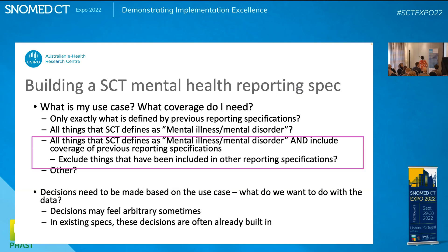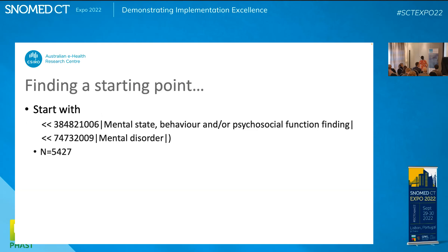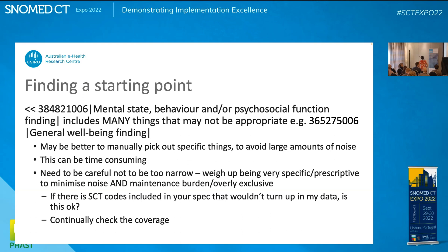I thought I'd lean toward taking advantage of what SNOMED gives us — go as wide as possible in terms of mental illness and mental disorder, while also making sure I can cover everything in the Queensland Health existing spec. I started with two node concepts and was extracting just over 5,000 SNOMED codes from the January 2022 release. But looking closer, the concept 'mental state, behaviour and mental or psychosocial function finding' includes so many things — including things like 'general wellbeing finding,' which is probably not really in scope for a mental health list. So it seemed better to pick out specific things to avoid some of the noise.